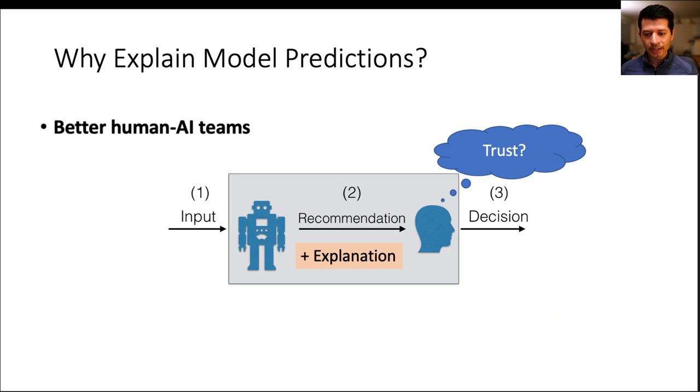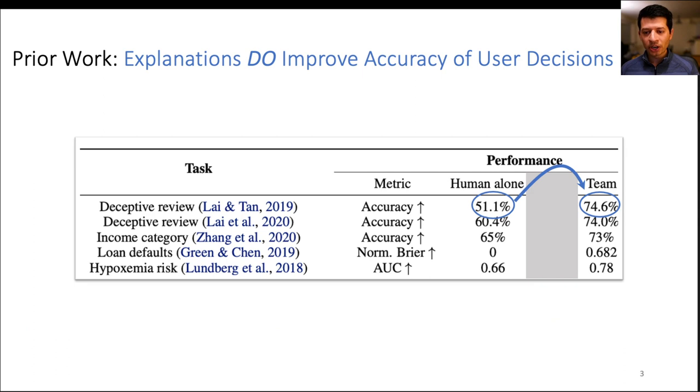But do current explanations improve AI-assisted decision-making? Many prior works have shown that explanations improve performance of users for tasks ranging from detecting deceptive reviews to projecting loan defaults and patient care. In each case, prior works have shown that the team where explanations were shown to the users performs better than humans by themselves.